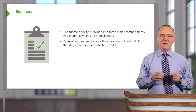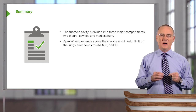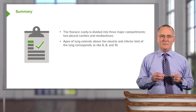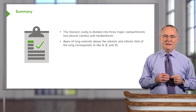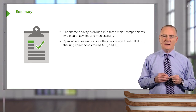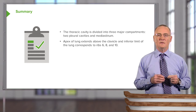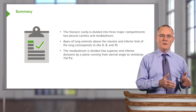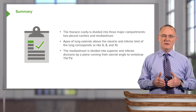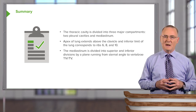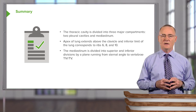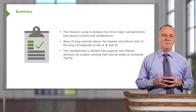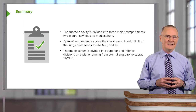The apex of each lung extends above the clavicle to the level of C7 for the vertebral level, and the inferior limit of the lung will correspond to ribs 6, 8, and 10. The mediastinum is divided into superior and inferior divisions by a plane that runs from the sternal angle to an area located between T4 and T5.